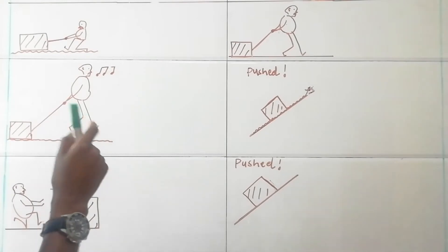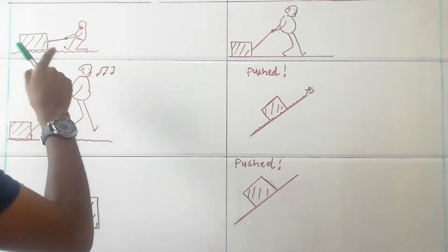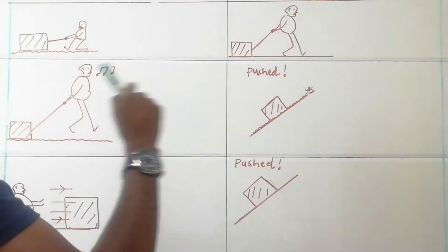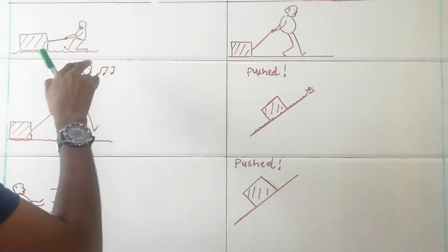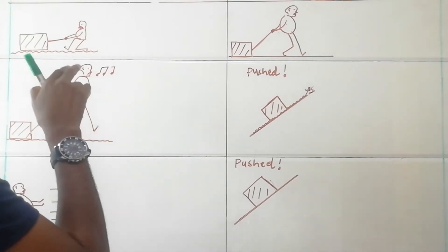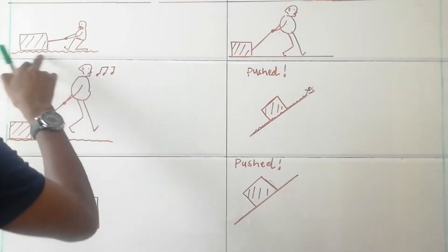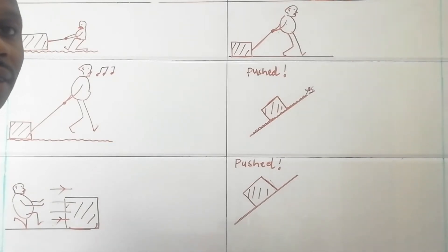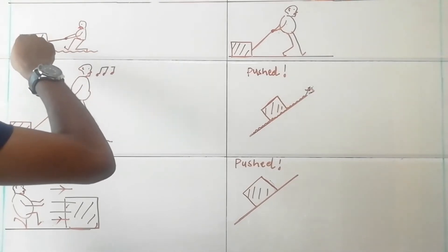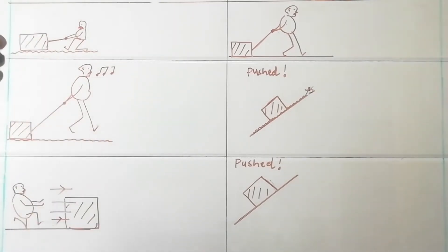In our first case, we can see that we have a person pulling a box towards the right direction, and this box is being pulled on a surface that is rough, meaning that you will expect frictional force to exist between the surface and the box. That's step number one. Then step number two, we list the contact forces that might be existing on our object of interest, which is the box.